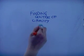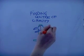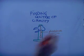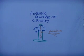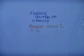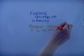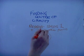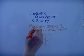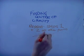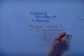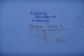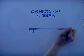Step two, use a plumb line and draw a line straight down from the point. Step three, repeat steps one and two at other points. Step four, wherever the lines all cross is where the centre of gravity is.